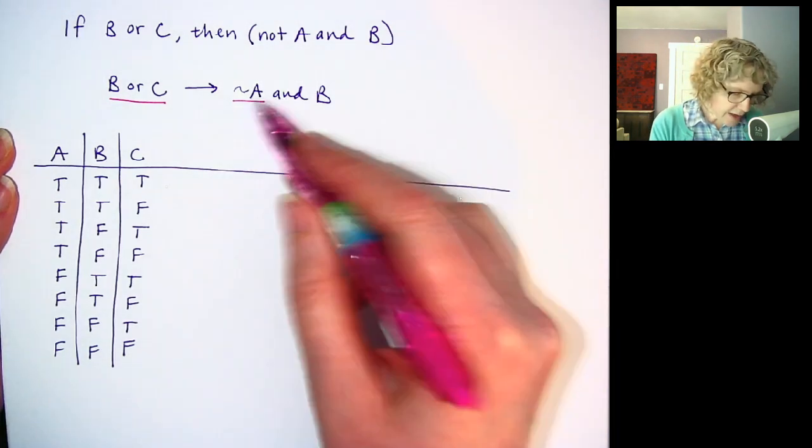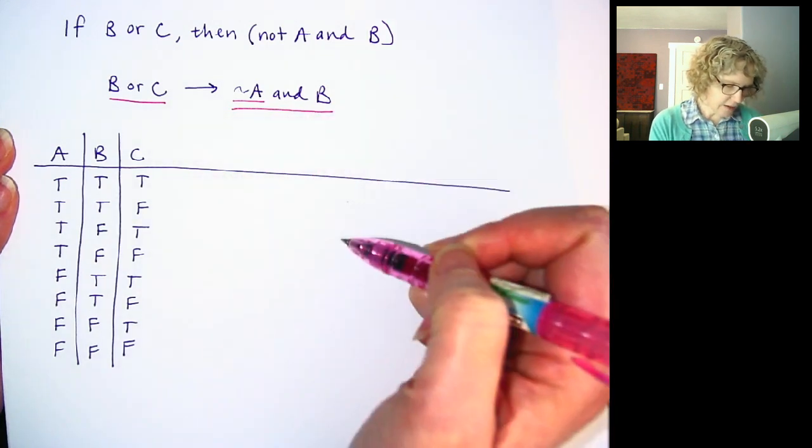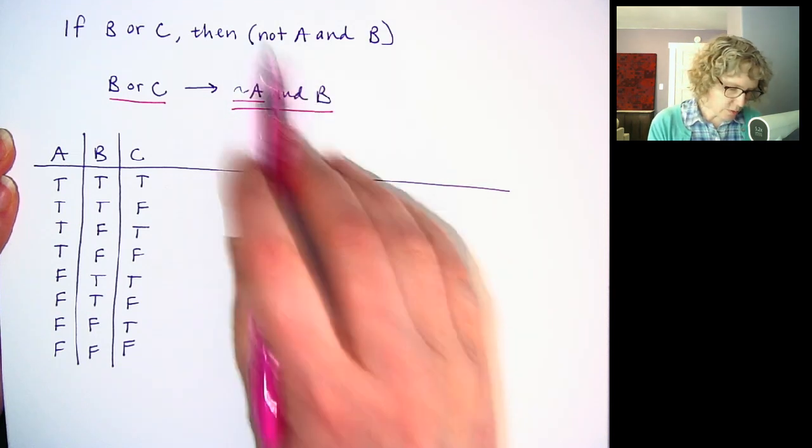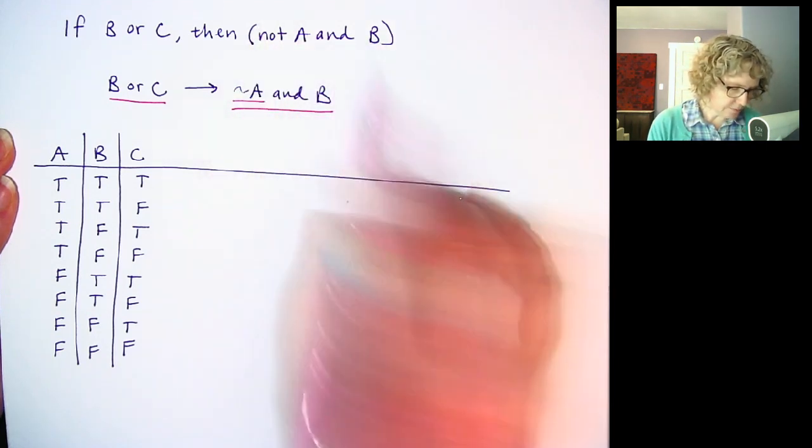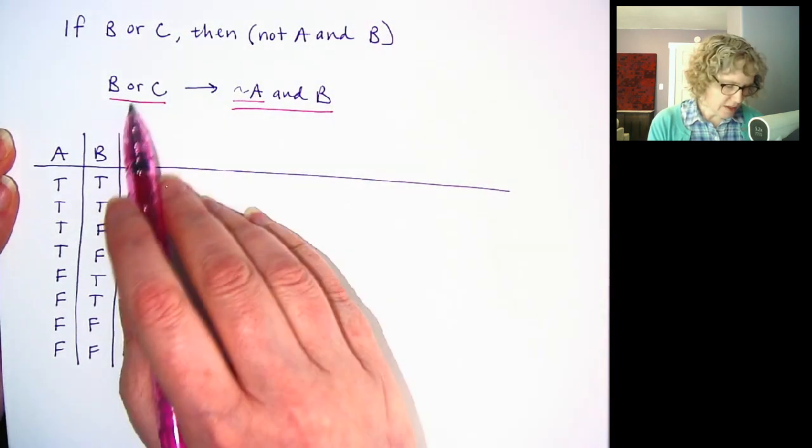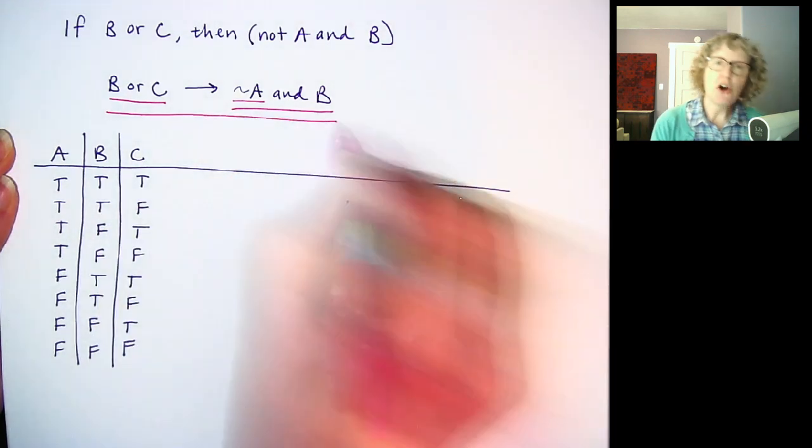Then we have an and. So we have not A and B. And also, sometimes we put it in parentheses to be really clear that that's one whole quantity. And then we have our last statement, which is, if this, then that. So that will be the very last column.